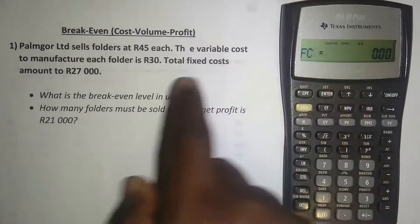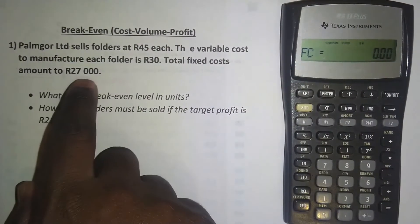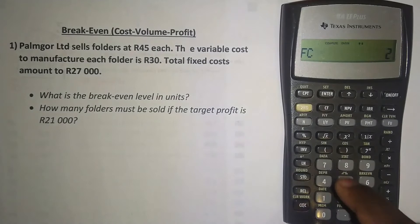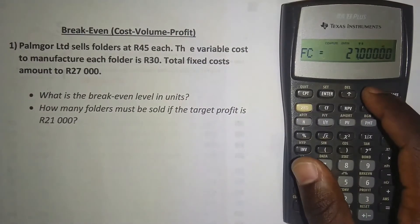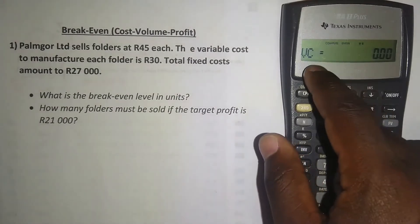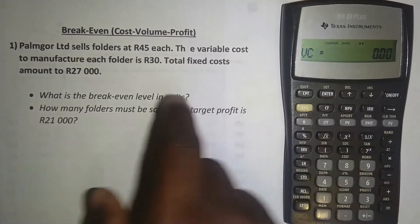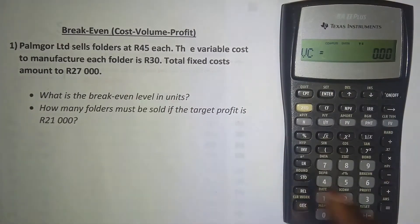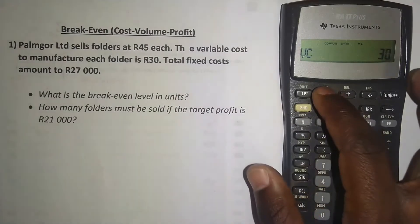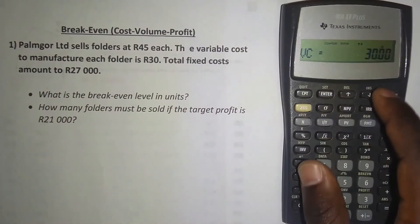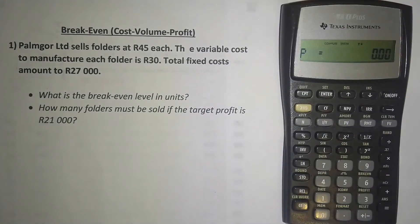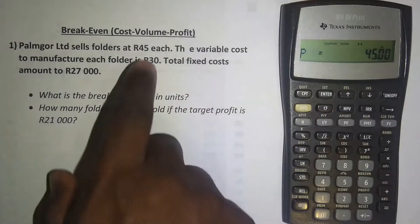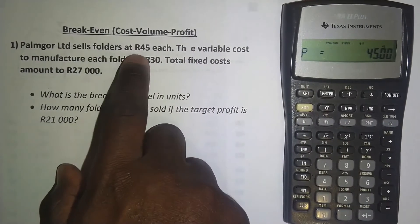The calculator asks for the fixed cost. We're told total fixed costs amount to 27,000 rand, so we enter 27,000 and press Enter, then press the downward arrow. It asks for the variable cost — the variable cost per unit is 30 rand, so we enter 30 and press Enter, then press the downward arrow. It then asks for the price, meaning the selling price, so we enter 45 rand and press Enter.